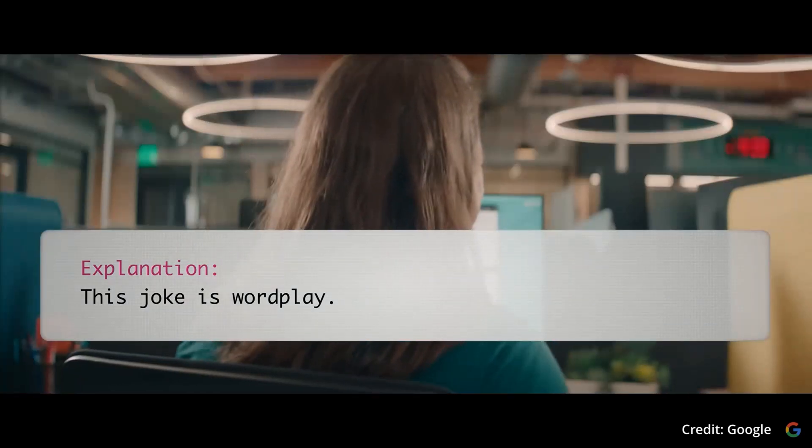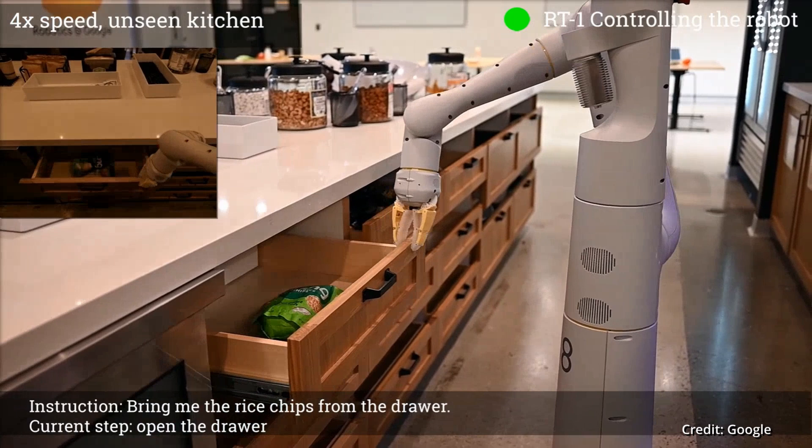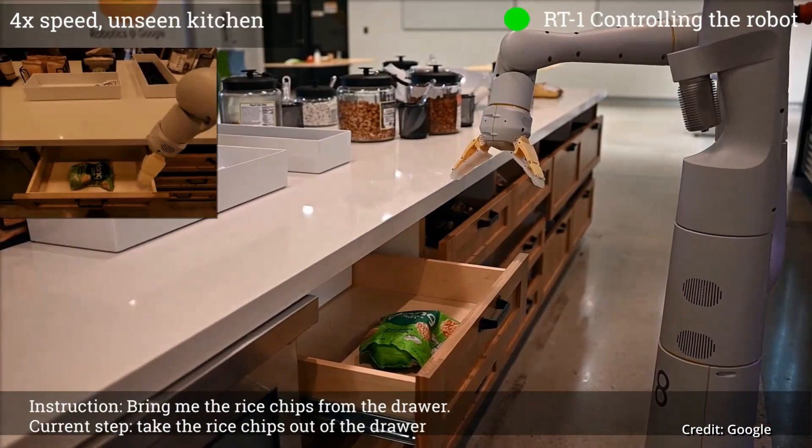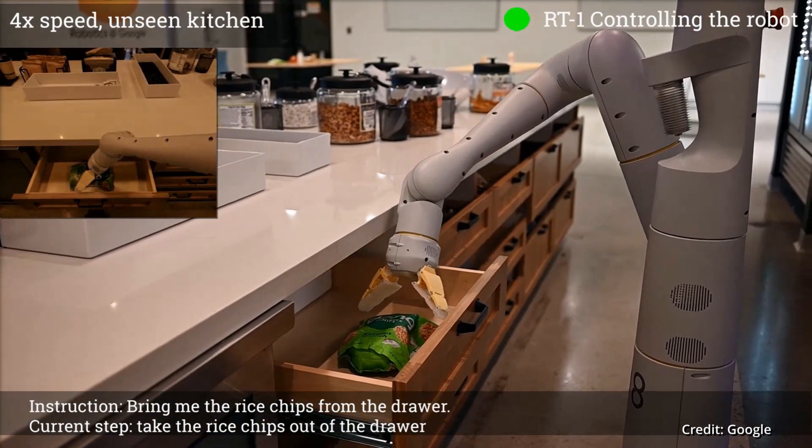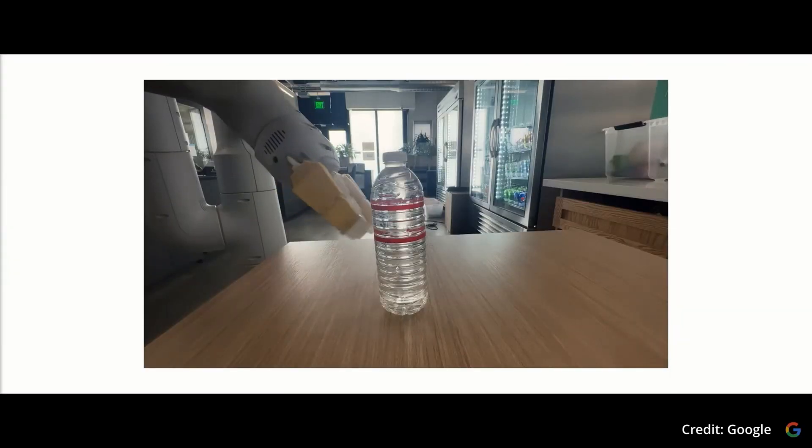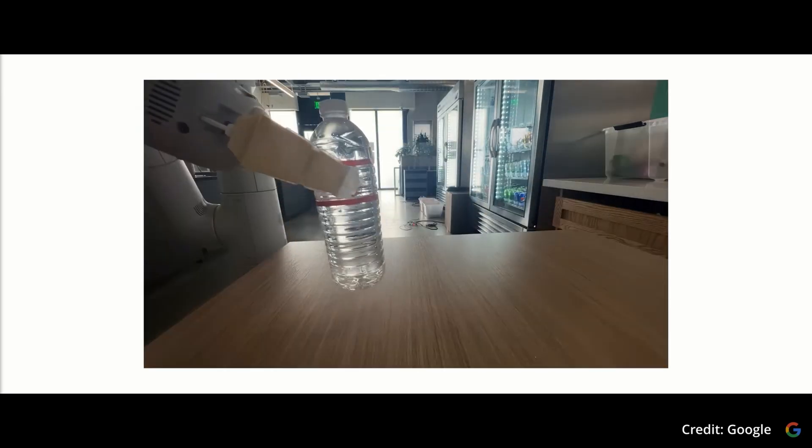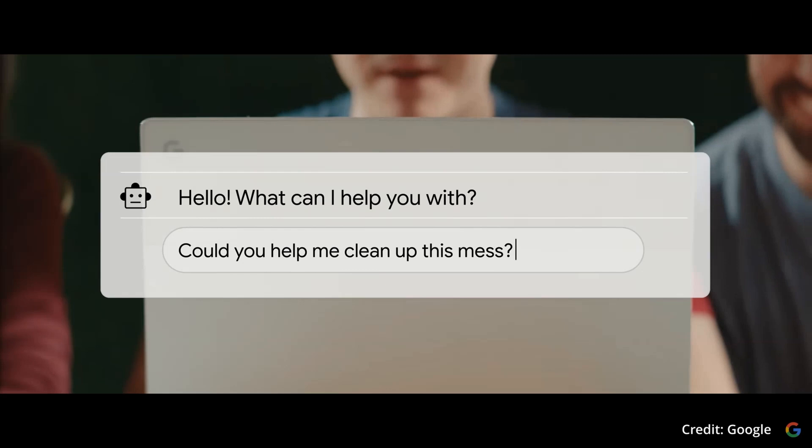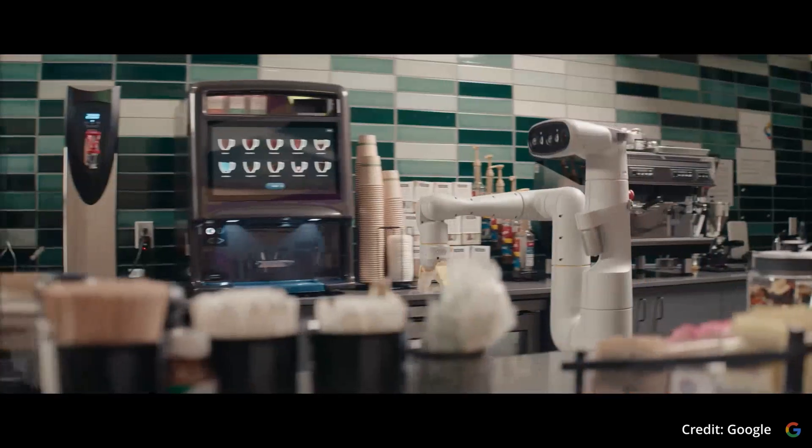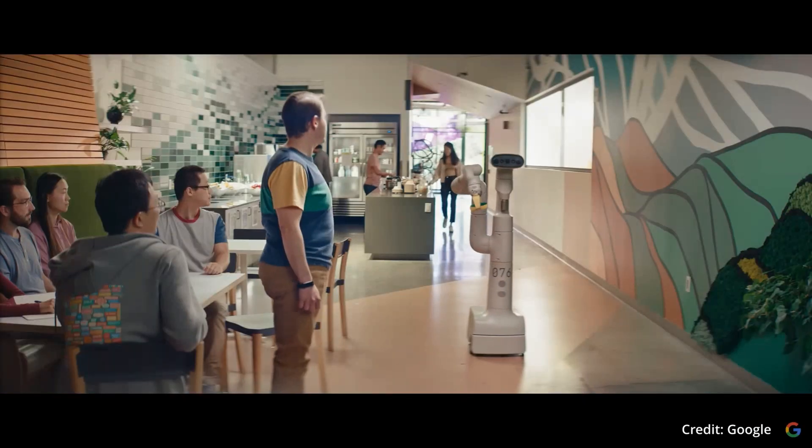In this cycle, RoboCat begins by collecting new task demonstrations using a human-controlled robotic arm. It then fine-tunes its learning for this new task, creating a specialized agent. This agent practices the new task an average of 10,000 times, creating a wealth of new training data in the process. This new data is then incorporated into RoboCat's existing training dataset. The cycle completes with a new version of RoboCat being trained on this updated dataset.